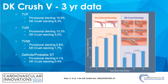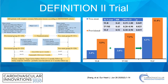The DK Crush 5 trial was published last year, which showed an improved outcome with DK crush stenting as opposed to provisional stenting for left main bifurcation disease. And finally, the Definition 2 trial was just published, which looked at patients with complex coronary bifurcation lesions randomized to either a provisional approach or a two-stent technique. The outcomes for TLR, target vessel MI, or target vessel failure all favored the two-stent strategy over a provisional technique.